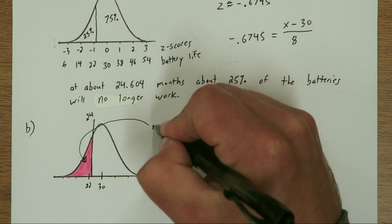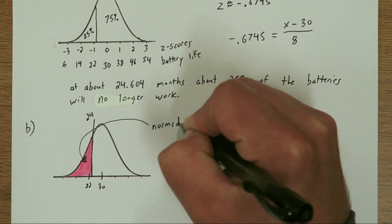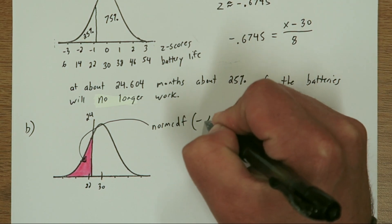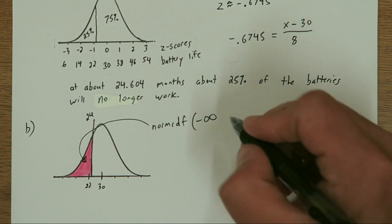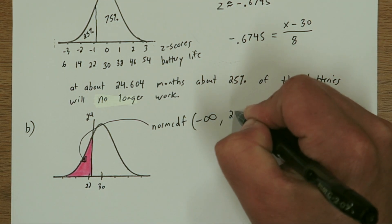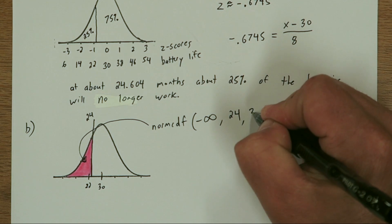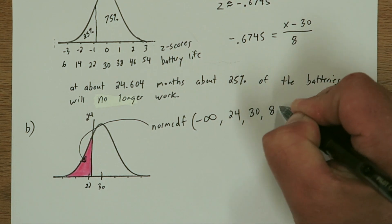To determine that probability, we're going to use norm CDF on our calculator, and we're going to go from negative infinity, because that's way over here, all the way up to a battery life of 24 months with a mean of 30 and a standard deviation of 8.